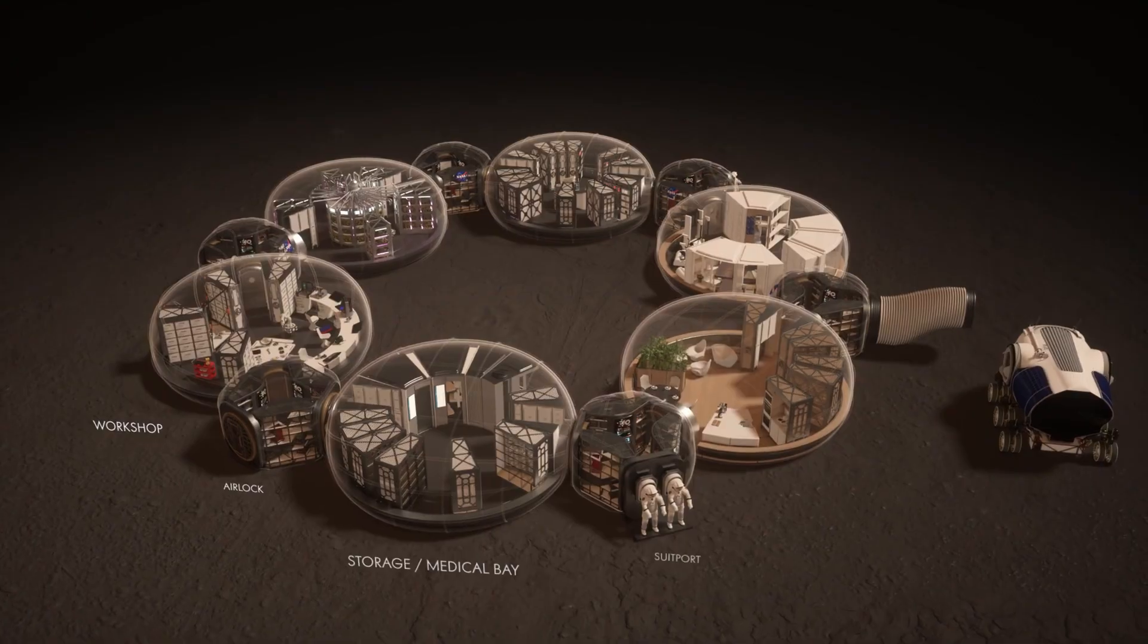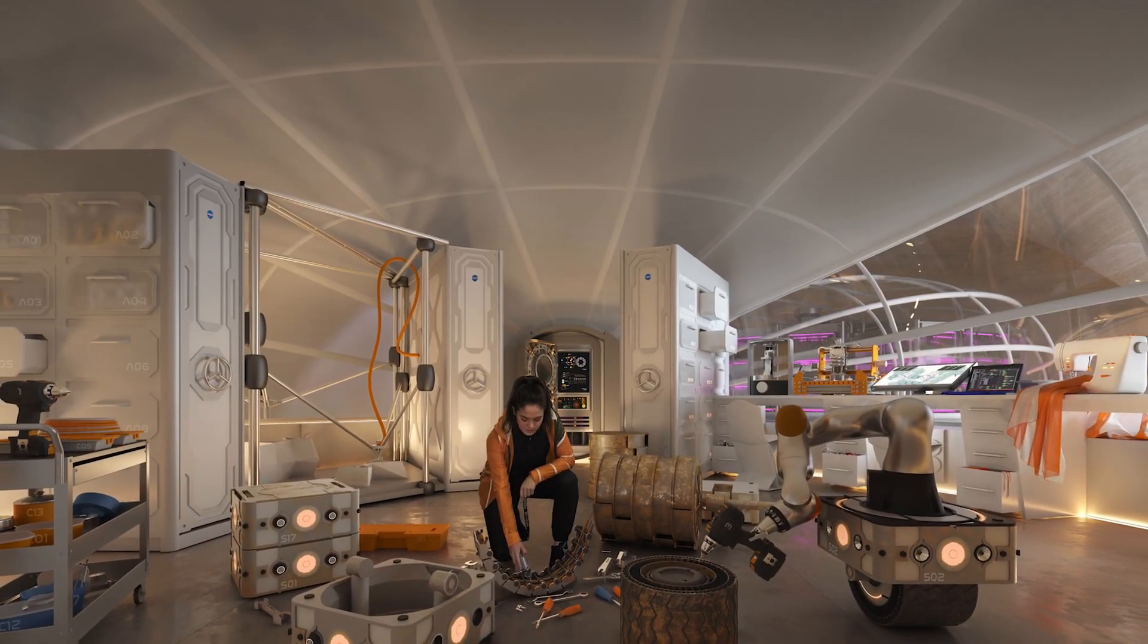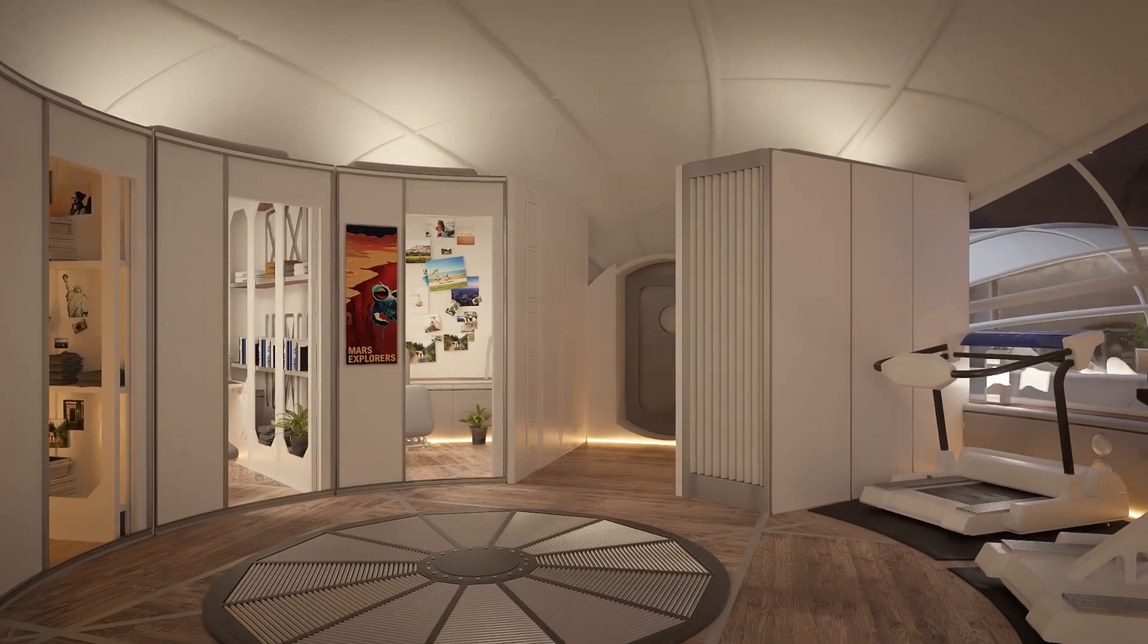What's brilliant is how it prioritizes astronaut mental health alongside survival, incorporating natural lighting, communal spaces, and earth connections through smart interior design, showing what home might actually look like on another world.